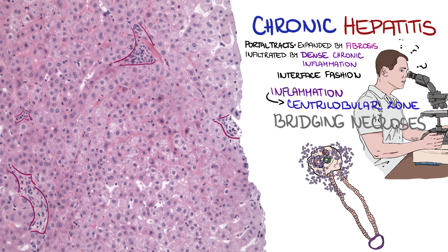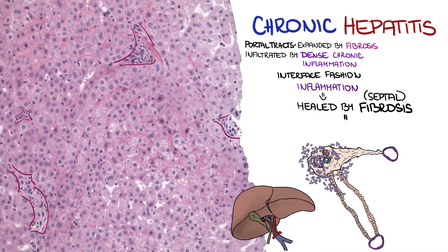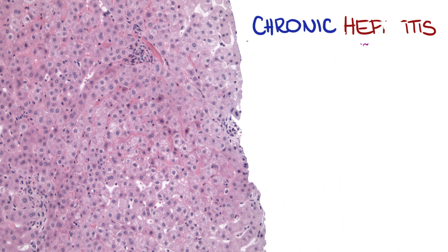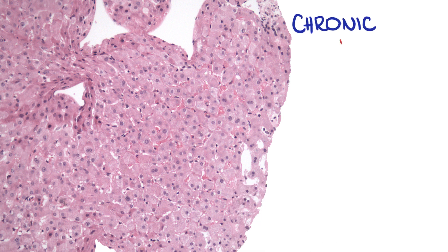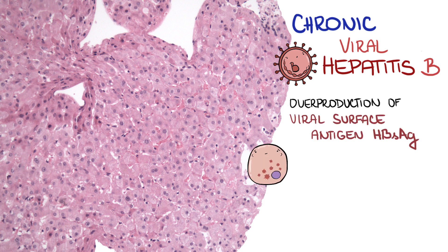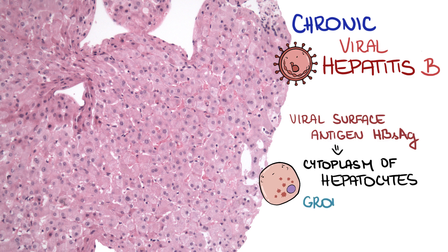In the course of time, the inflammation is healed by fibrosis. We can often see development of septal fibrosis and the disease may progress to cirrhosis. For details about fibrosis and cirrhosis, see our corresponding video. In some cases, we can appreciate other morphological details that can lead us to a specific diagnosis. In chronic viral hepatitis B, there is an overproduction of viral surface antigen during replication of the virus. This protein is stored in the cytoplasm of hepatocytes.